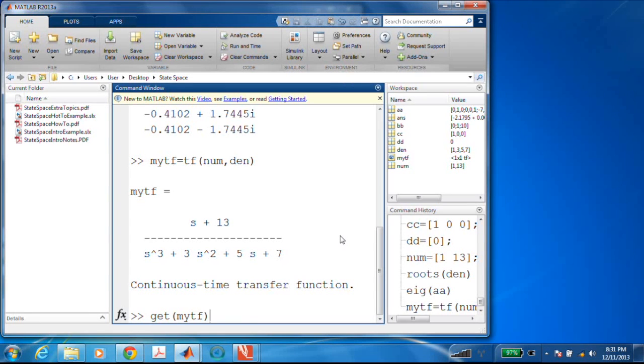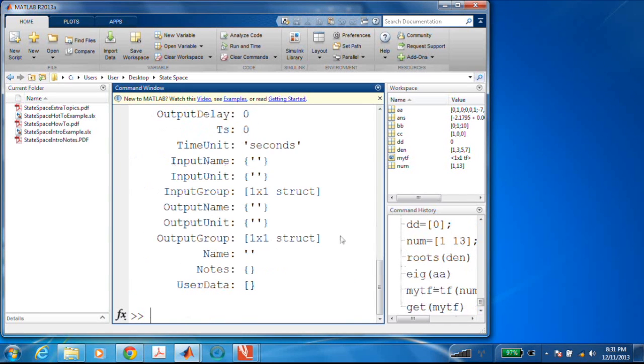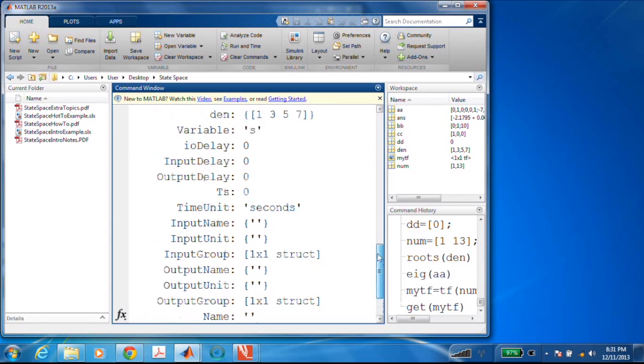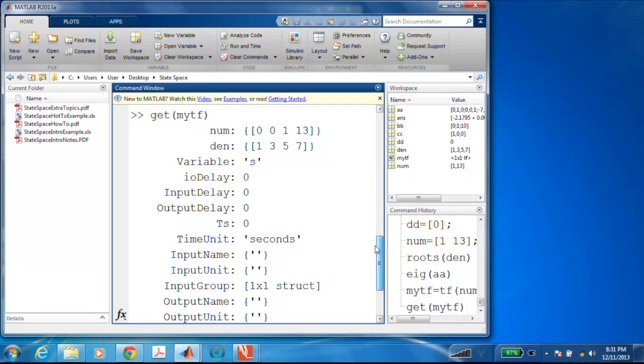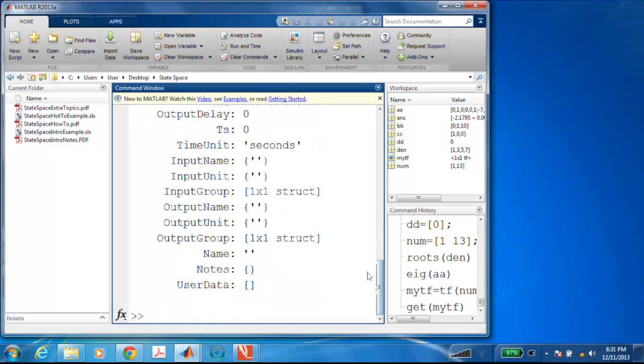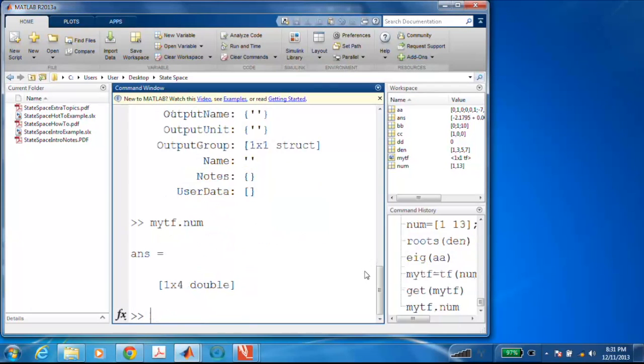If you use the get command in MATLAB, which is sort of an all-purpose command to look at properties of different types of objects, we'll say get my TF and it tells us all the different fields associated with it. Field isn't quite the right term, but maybe methods. So we can see that it has the numerator and denominator in there. If I wanted to access that back, I could say my TF dot num. Well, it isn't showing us the whole thing, but it's there. So for instance, if I had a transfer function object, and I wanted to find the roots of its characteristic equation, I could,